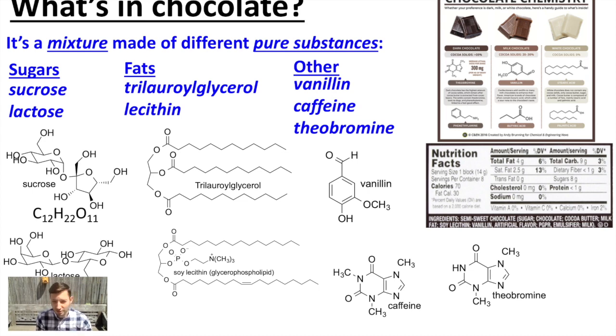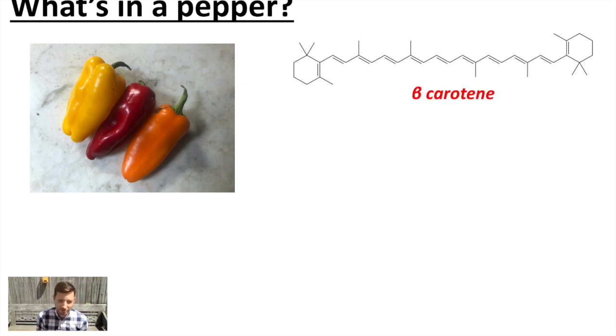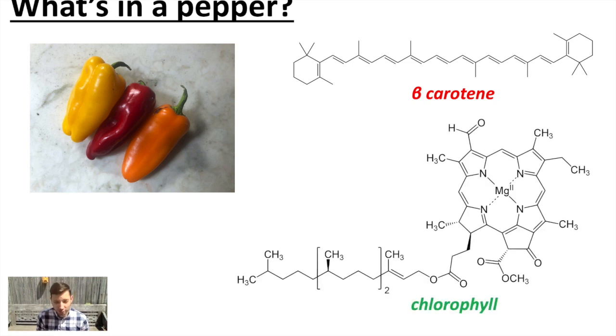We could do this for a pepper too. Here's a picture of three peppers from my kitchen just this morning. Peppers have different colors, often due to carotenoids, such as perhaps the familiar beta-carotene molecule. They often have chlorophyll. Most plants have chlorophyll. You should know about that from photosynthesis in your biology class. Most fruits and most foods contain some amount of water.